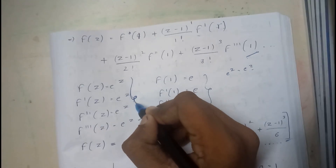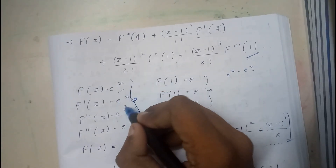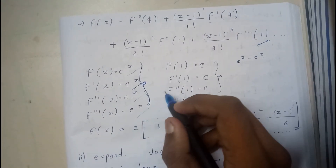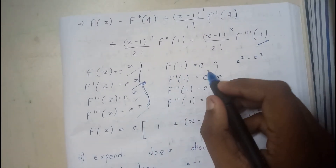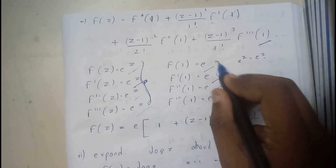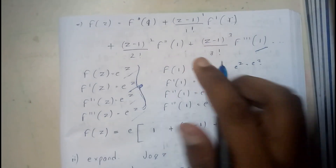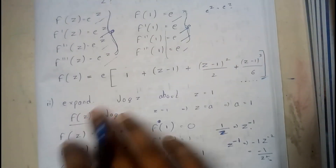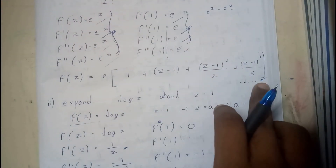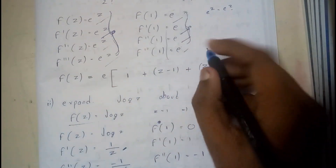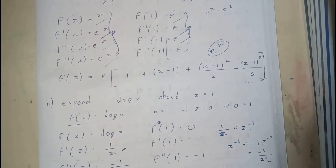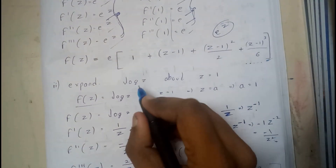I found f(z), f′(z), f″(z), and f‴(z) first. Then in place of z I substituted 1 to get those values. Substituting into the formula, I took e common since every individual term has e. Once we take e common, we get the final equation — this is the Taylor's series expansion of the given function e^z.